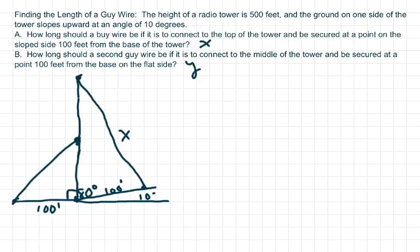Hi everyone, we're going to find the length of a guy wire, which is like a rope used to prevent something like, in our case, a radio tower from swaying. So this is the radio tower, it's 500 feet high.